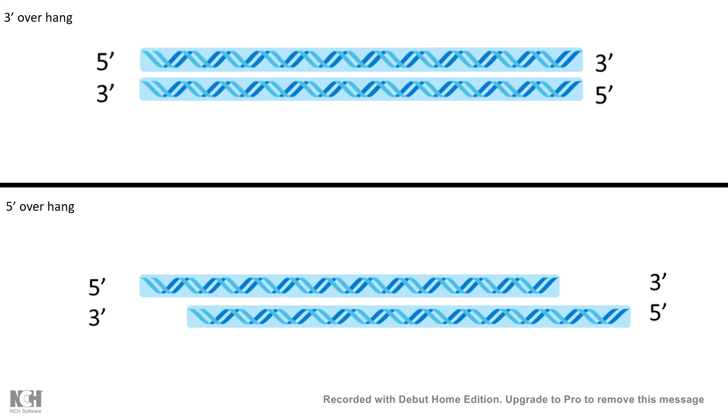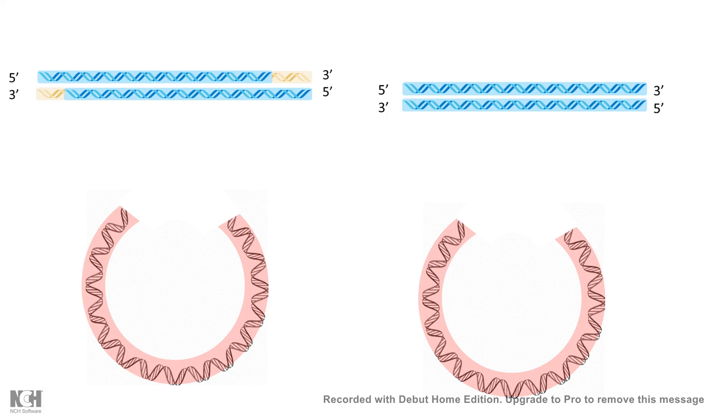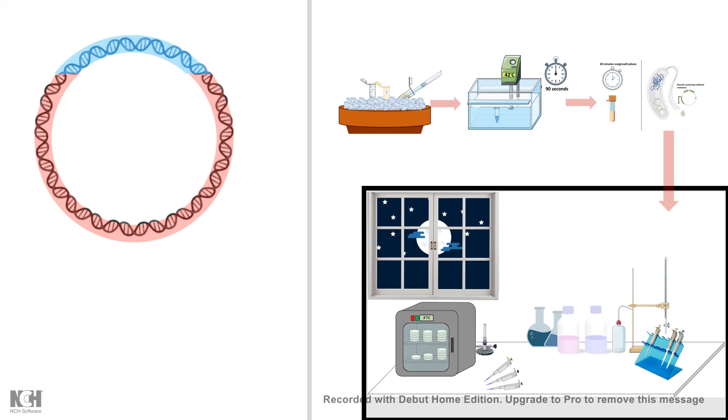Both the cases, be it chopping off the 3' overhang or filling in the gap in the 5' overhang, both would create blunted products. And these blunted inserts could be incorporated into the blunt vectors. And that is how the cloning, the further steps of the cloning can be proceeded with.